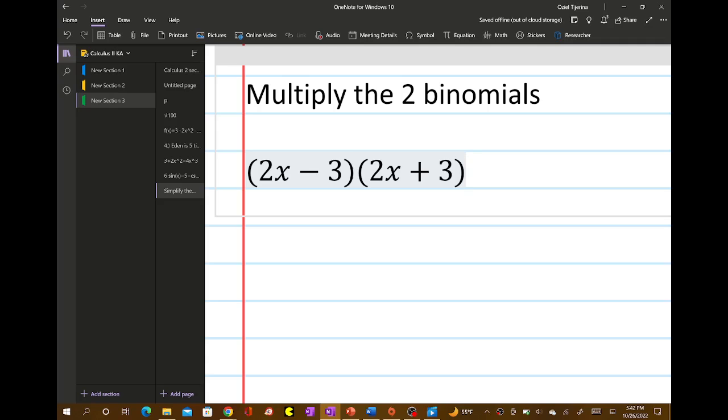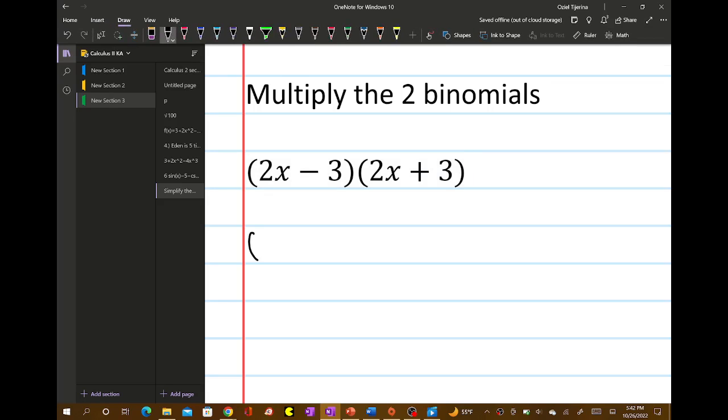So if you have a plus b times a minus b, this is probably one of the simplest ones that we can do because the formula is so simple. It's just a squared minus b squared.